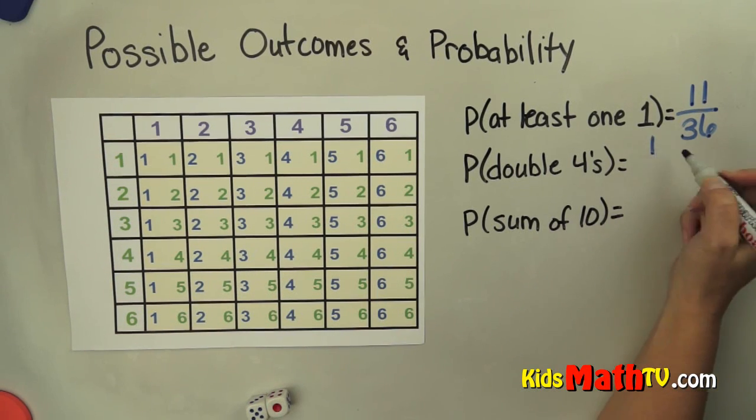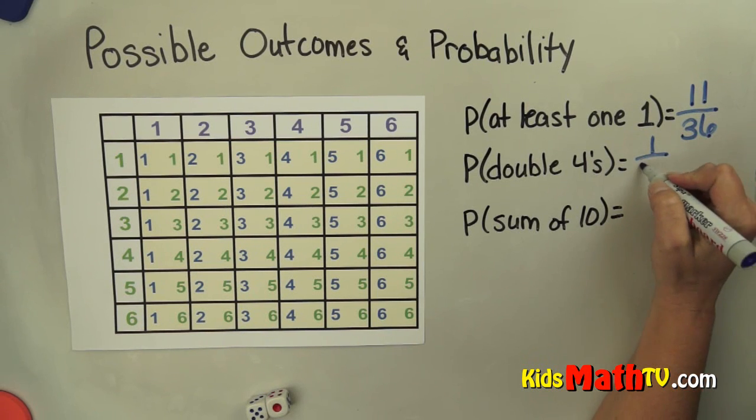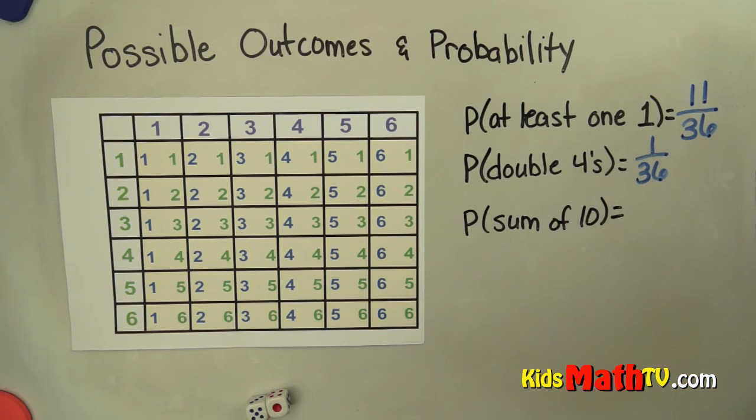So there's one outcome of double 4's out of 36 total. So the probability of rolling double 4's is 1 out of 36.